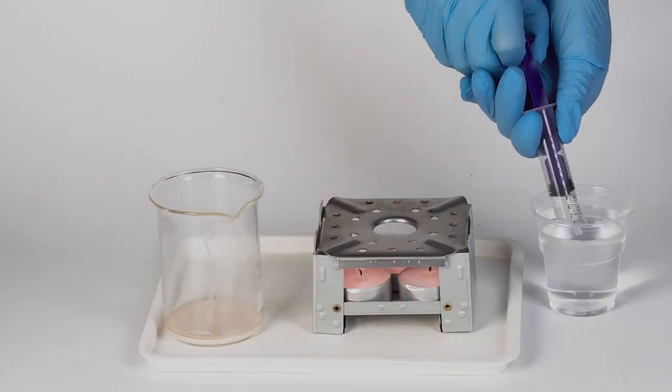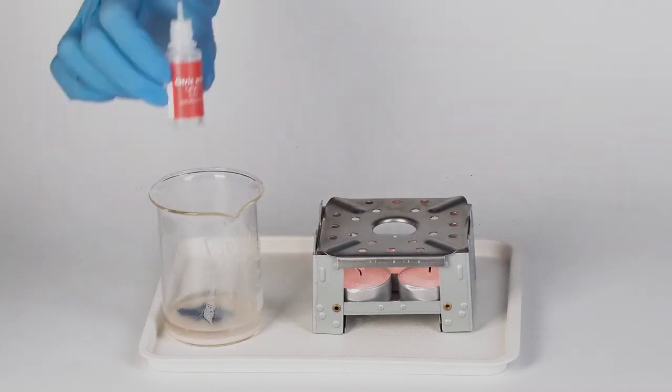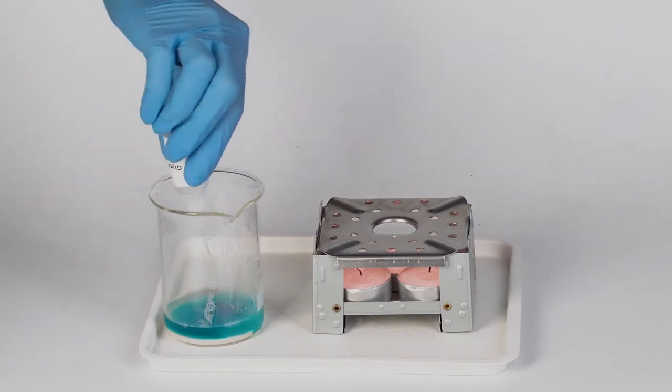Add 10 milliliters of water and two to three drops of methylene blue into the beaker. Then pour in all of the contents of the bottles with glycerol and citric acid.